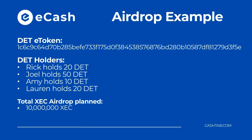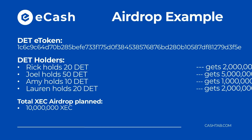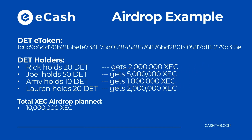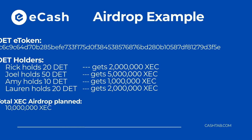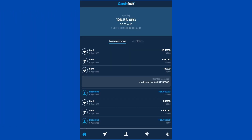Let's say as the owner of this e-token you would like to airdrop 10 million XEC to these holders as a reward for their loyalty. Using the CashTab airdrop calculator, Rick will get an airdrop of 2 million XEC coins, calculated on a pro-rata ratio based on the 20 tokens he's holding. Joel gets 5 million, Amy gets 1 million, and Lauren gets 2 million.